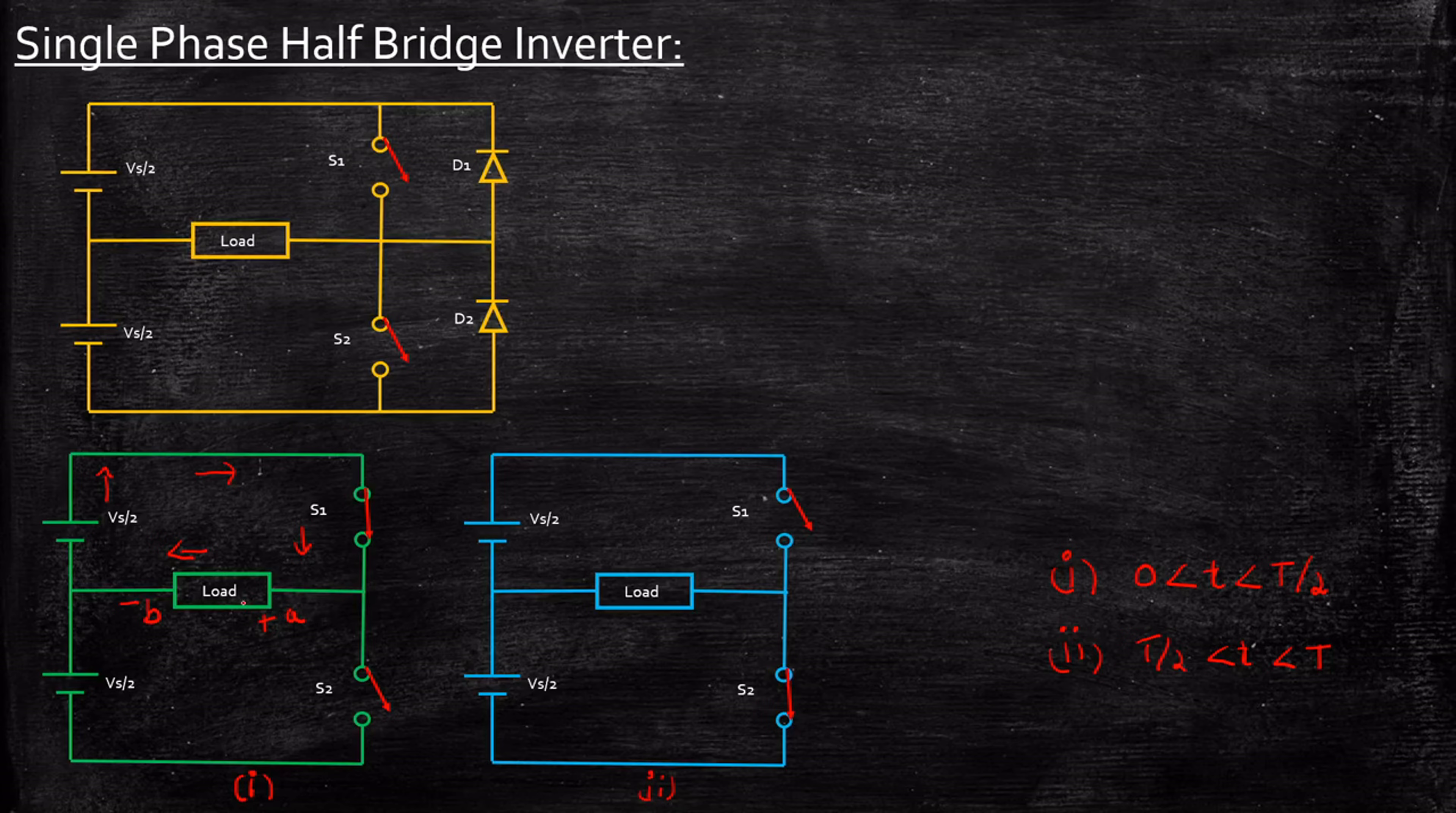So the output voltage will be equal to Vs/2 plus Vs/2. S2 is acting as an open circuit because I'm not going to energize it—I'm not giving a gate pulse to it. As a result, the current flow will be only through this path, and you're getting Vs/2 as the output voltage during this interval.